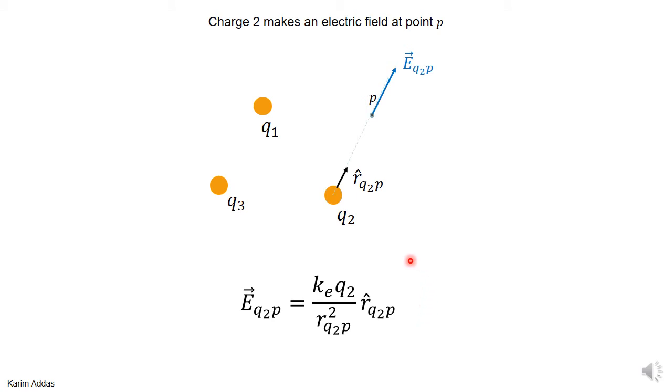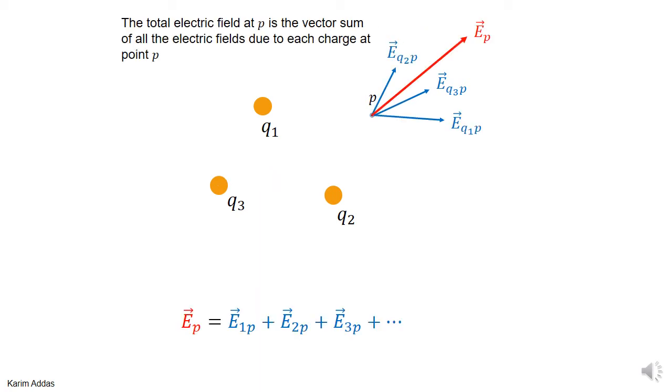We can get the electric field at point P due to charge 2, and we know how to do that. From the principle of superposition of fields, we know how to get the total electric field at point P. You just get it by adding the electric field vectors due to each of the charges. If you have more charges, you just add the field due to those charges too.